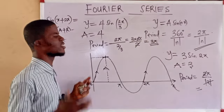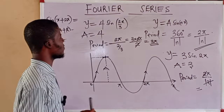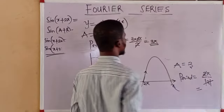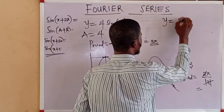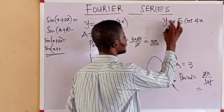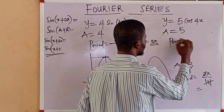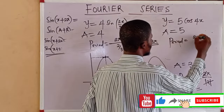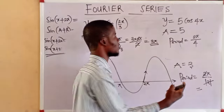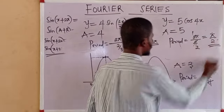We can also extend this to determine the amplitude and period of a cosine function. For y = 5cos(4x): the amplitude is 5, and the period is 2π / |4| = 2π / 4 = π/2. This is how to determine the amplitude and the period of a periodic function.